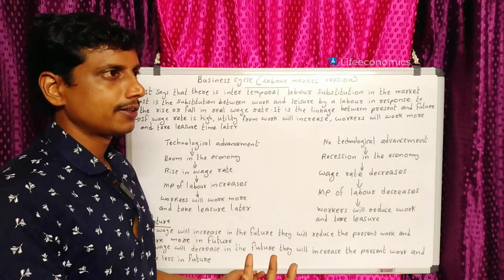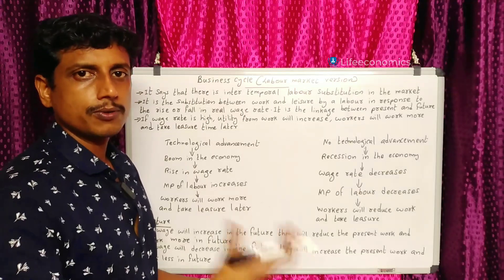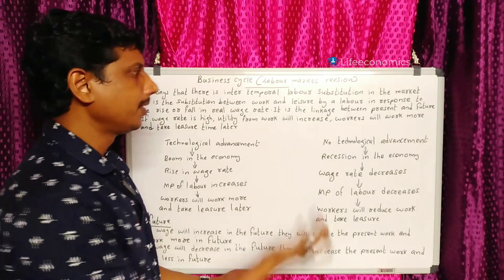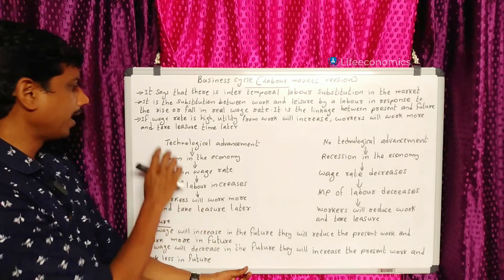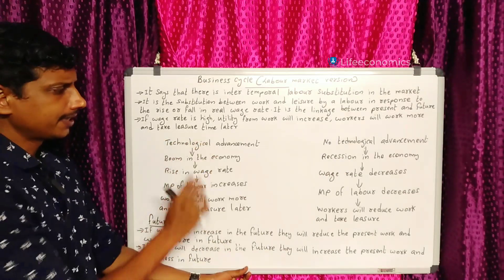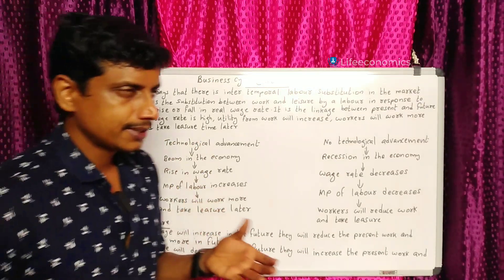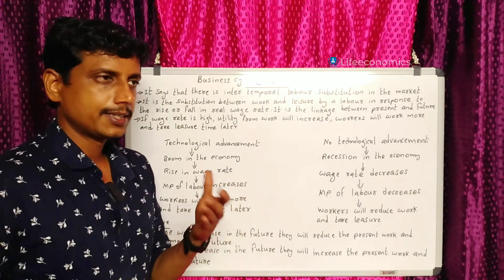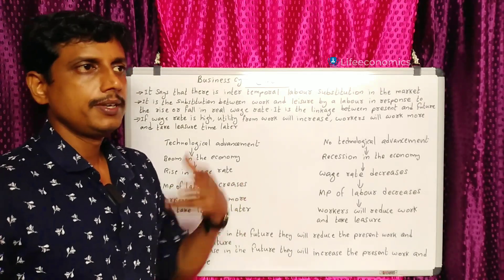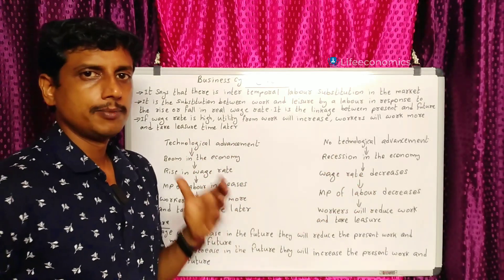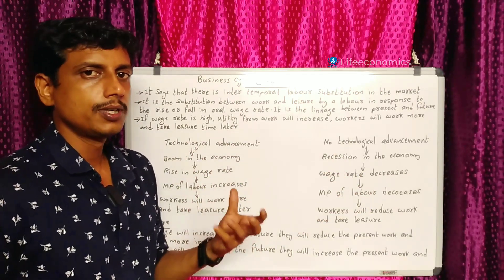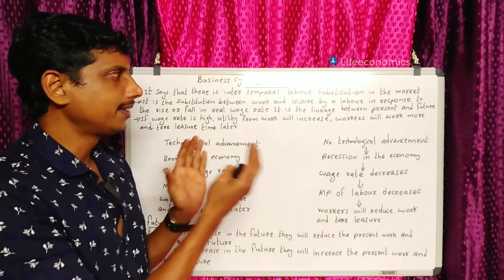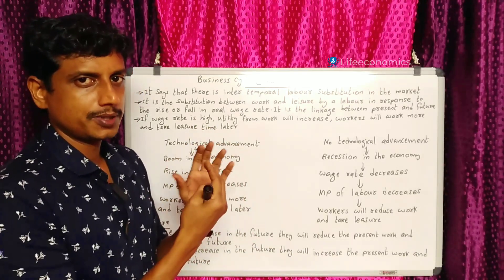When utility from work increases, workers will work more and take less leisure time. This trade-off between work and leisure time in response to wage rates is what we call inter-temporal labor substitution.